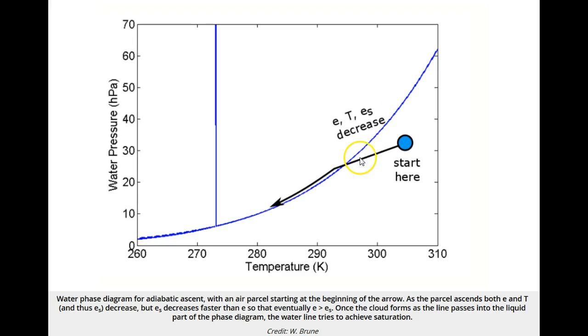So vapor pressure and saturation vapor pressure are both dropping. However, in adiabatic ascent, the saturation vapor pressure drops faster than the vapor pressure. And eventually, they become equal, and then supersaturation becomes greater than zero, and the cloud forms.